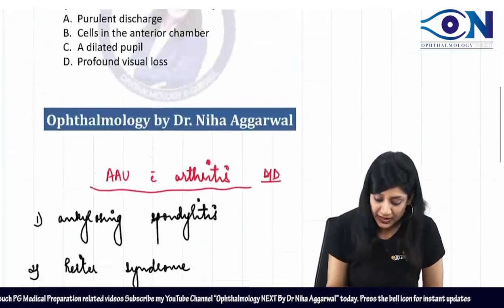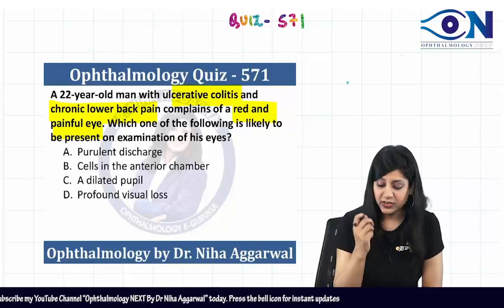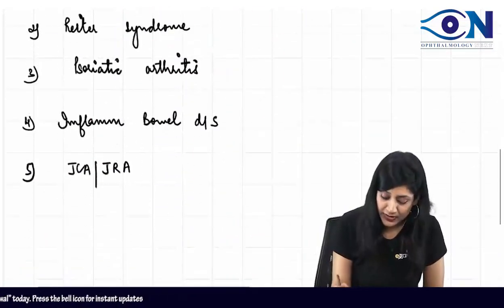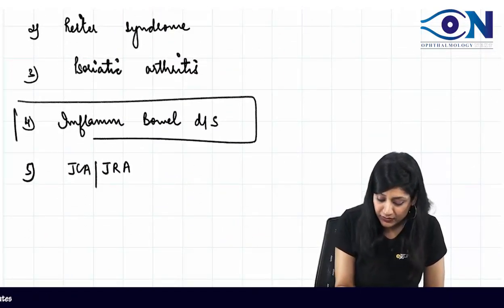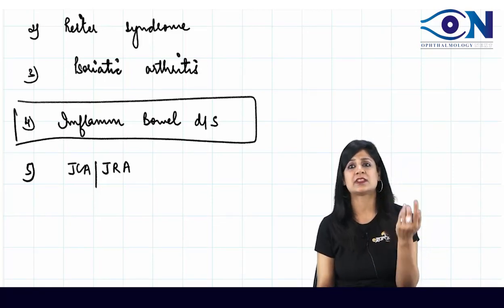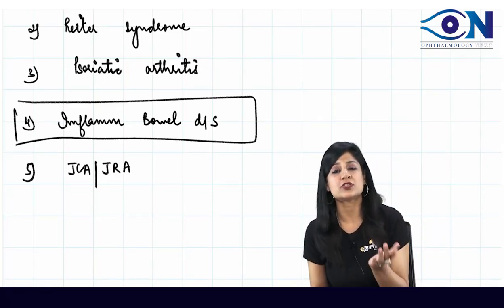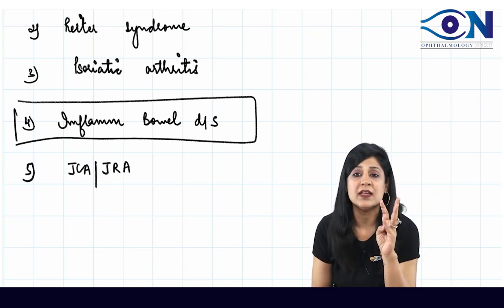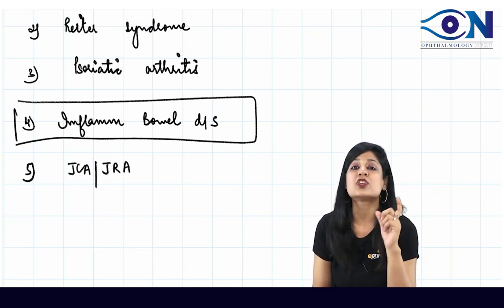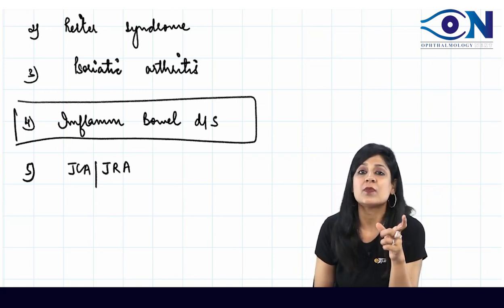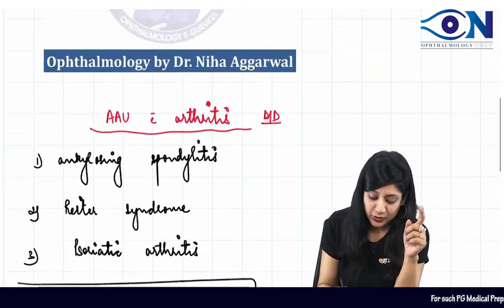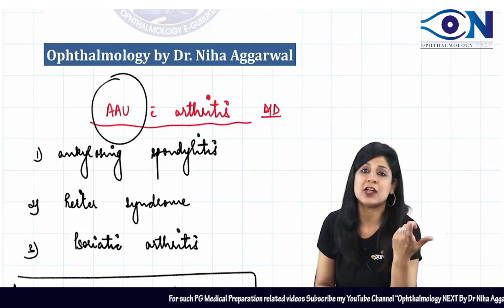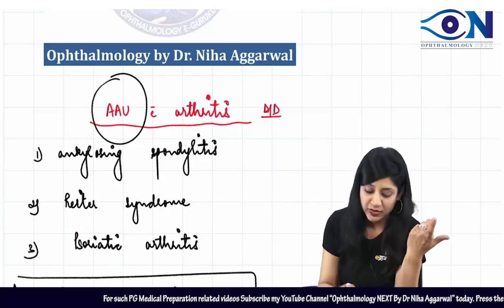Now, they are saying it's a patient of ulcerative colitis, so basically they are talking about inflammatory bowel disease, which can be ulcerative colitis or Crohn's disease. Along with this, you have arthritis and lower back pain. So the patient is presenting with acute red eye — that acute red eye is actually acute anterior uveitis. You have to simply find out the sign of acute anterior uveitis.